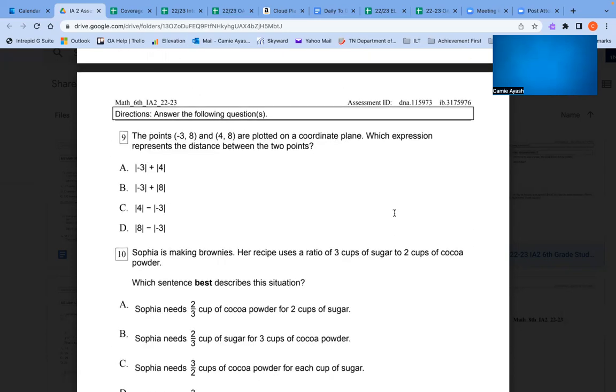Number 9: The points (negative 3, 8) and (4, 8) are plotted on a coordinate plane. Which expression represents the distance between the two points? A. Negative 3 plus 4. B. Negative 3 plus 8. C. 4 minus negative 3. D. 8 minus negative 3.